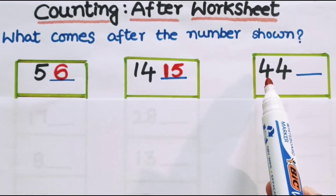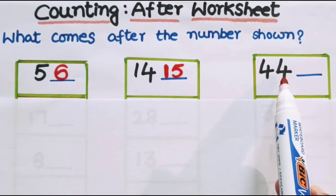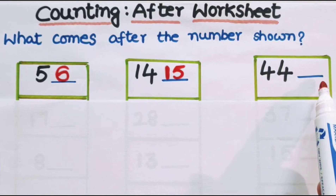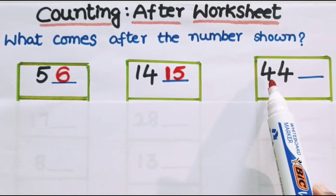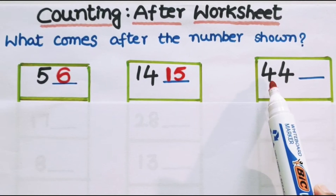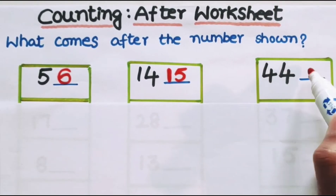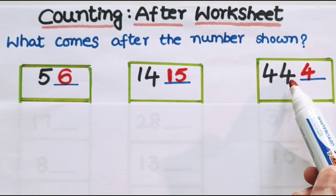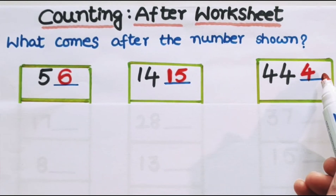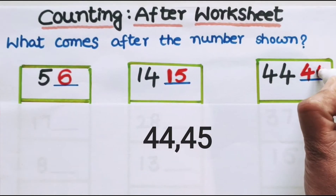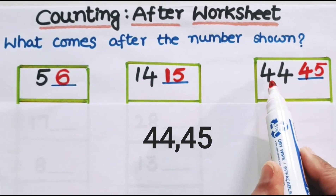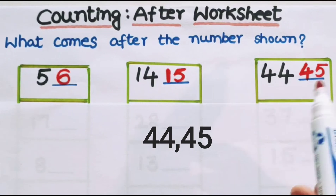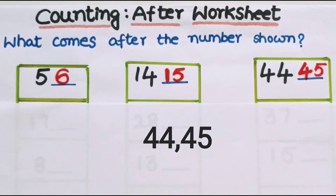Now look at the next number. It is 44. What number comes after 44? First we look at the tens place value — it is 4. In the ones place, the number is 4, and after 4 comes 5. So after 44, what number comes? It is 45. After 44, 45 comes. Very good!